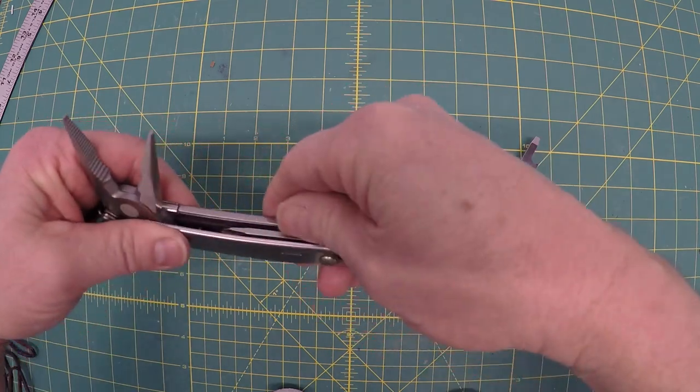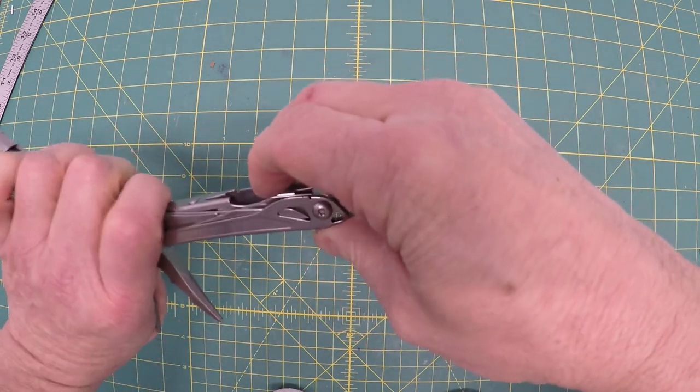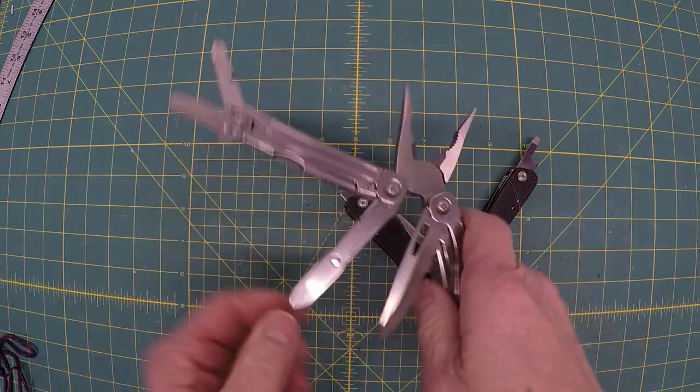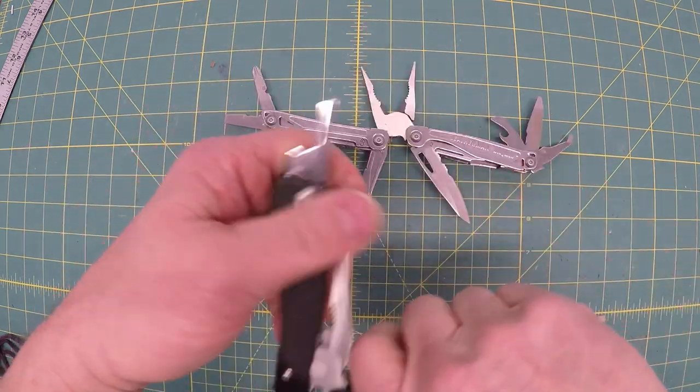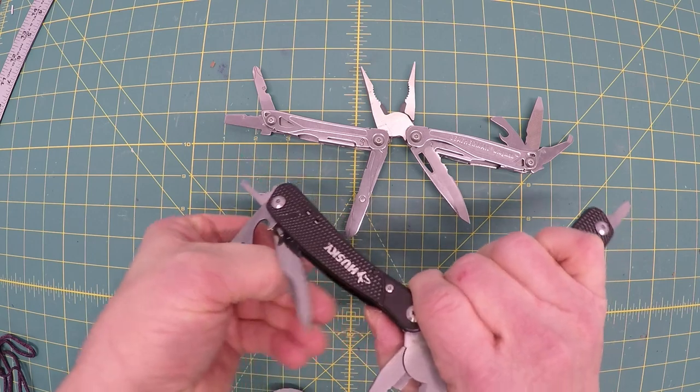Now we're going to open up the multi tools and show them in all their glory. This one's going to be interesting. I've got to be careful, I'm going to cut myself. So the Wingman plays out something like this. And then the Husky has what I will call a more traditional pattern.